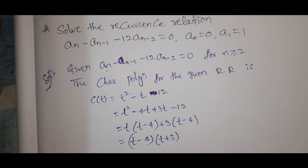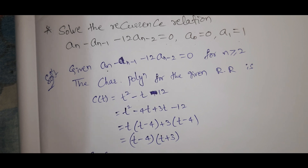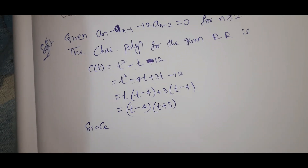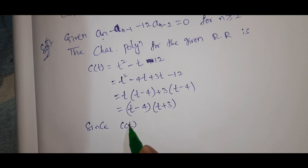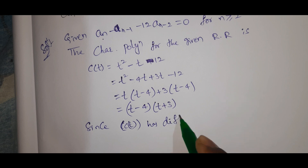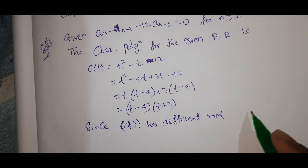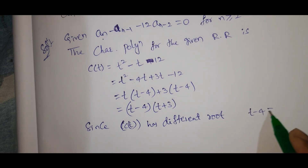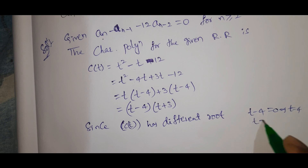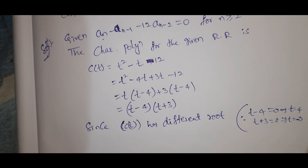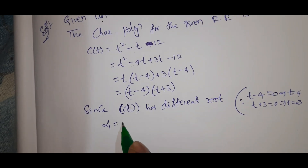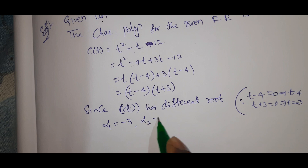Now we take the roots. Since c(t) has different roots: t minus 4 equal to 0 gives t equal to 4; t plus 3 equal to 0 gives t equal to minus 3. So alpha_1 equal to minus 3 and alpha_2 equal to 4.